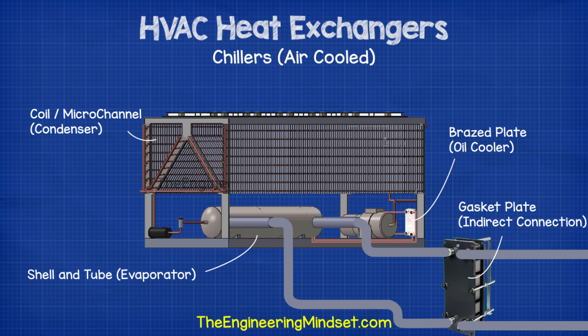A chiller will use either a shell and tube heat exchanger, a plate heat exchanger or a thin tube heat exchanger — and many chillers use a combination of all of these. For example, an air cooled chiller may use a shell and tube heat exchanger for the evaporator, a thin tube or micro channel heat exchanger for the condenser, a brazed plate heat exchanger for the compressor's oil lubrication cooling, and a gasket plate heat exchanger to indirectly connect the chiller to the central cooling circuit.